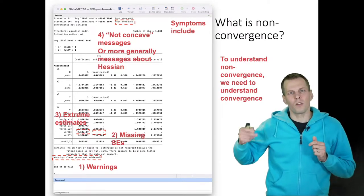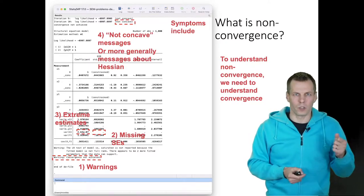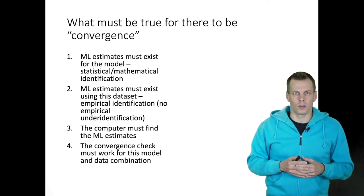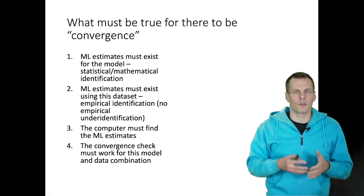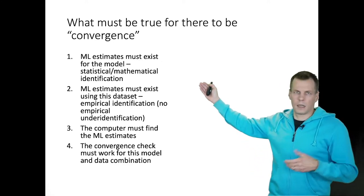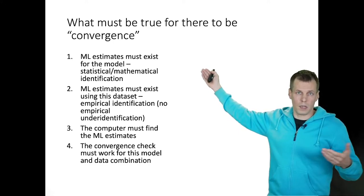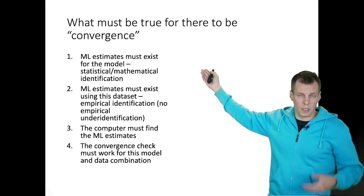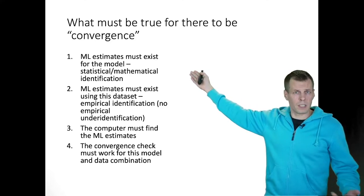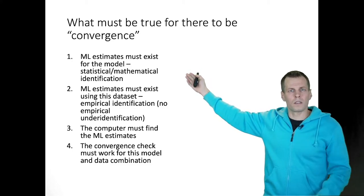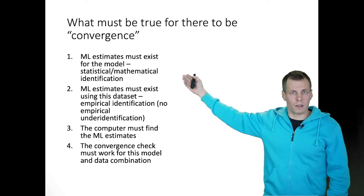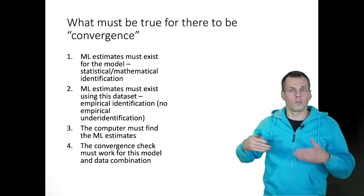We can't understand non-convergence unless we understand what it means for a model to converge. Here are four conditions for convergence, written in terms of maximum likelihood estimation but applicable to any numerical optimization technique. First, estimates must exist for the model — this is statistical and mathematical identification. Some models are impossible to estimate; for example, if you have one correlation, you cannot estimate two causal effects from it. The solution must exist in the first place.